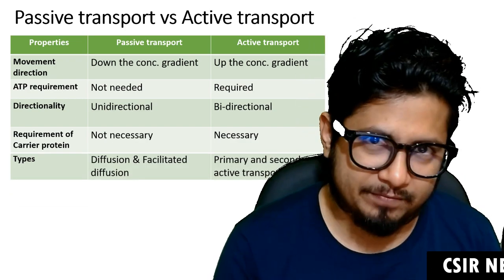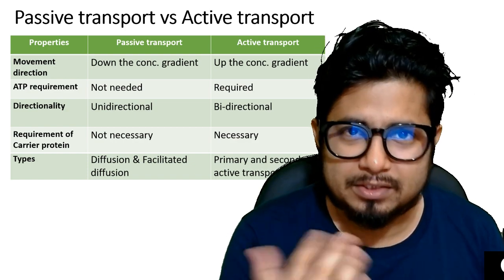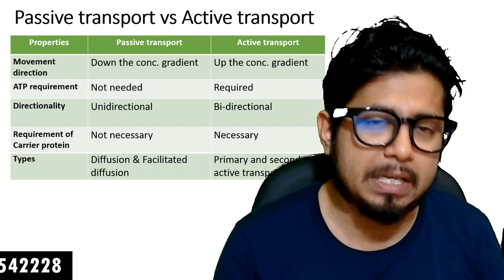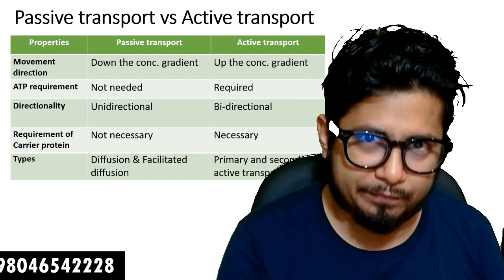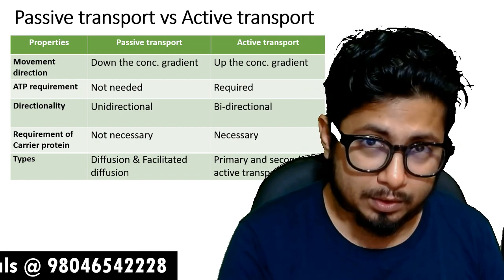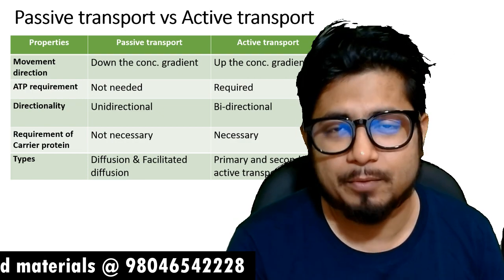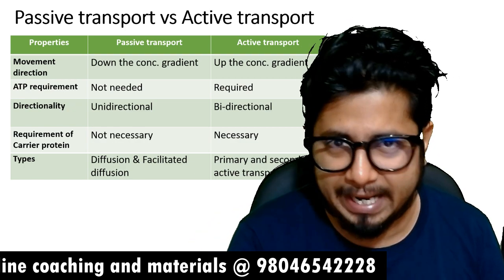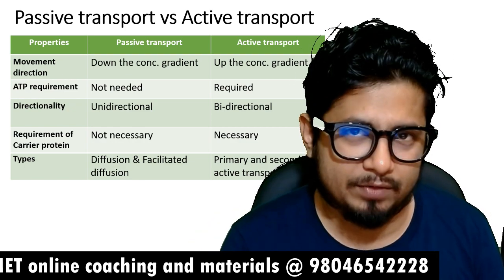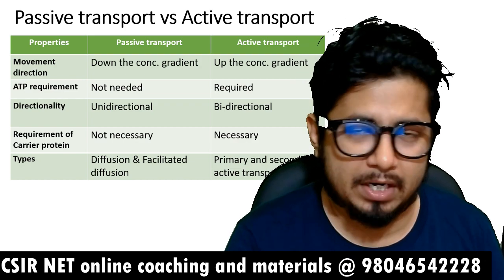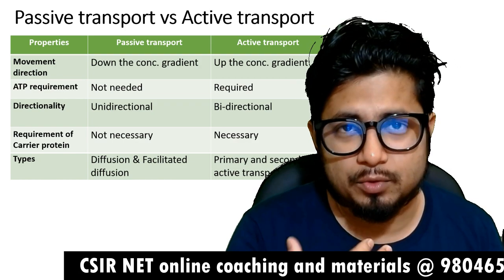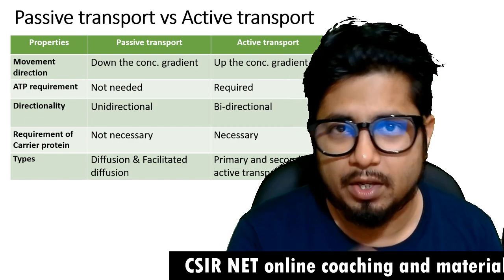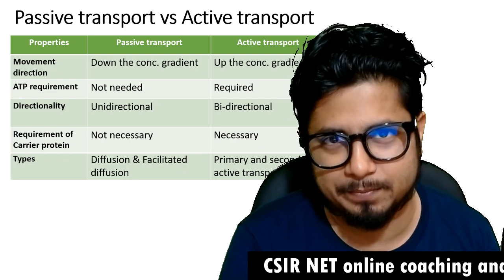Regarding the types of active and passive transport: passive transport can be divided into two types — simple passive diffusion, and facilitated diffusion, where the diffusion process works with the help of facilitator proteins embedded in the membrane. Active transport also has two types: primary active transport, which involves direct utilization of ATP to move solutes against their concentration gradient, and secondary active transport, which involves indirect utilization of ATP.